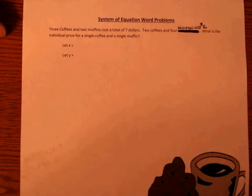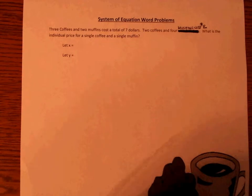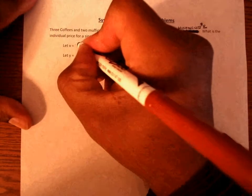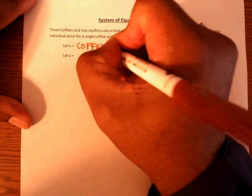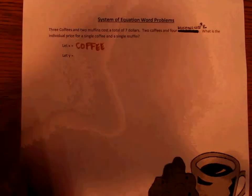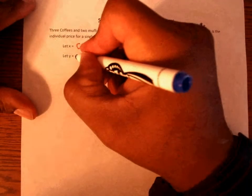First thing we need to do is indicate our variables. We're working with coffees and muffins, so we're going to let X be coffee and let Y be muffins.